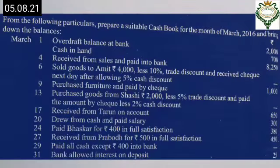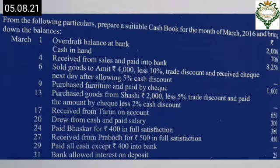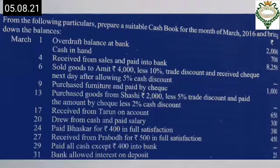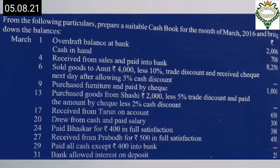The question says: from the following particulars, prepare a suitable cashbook for the month of March 2016 and bring down the balances. The first transaction on March 1: sold goods to Amit for ₹4000, less 10% trade discount, and received a check the next day after allowing 5% cash discount. For this we have to do a working note.